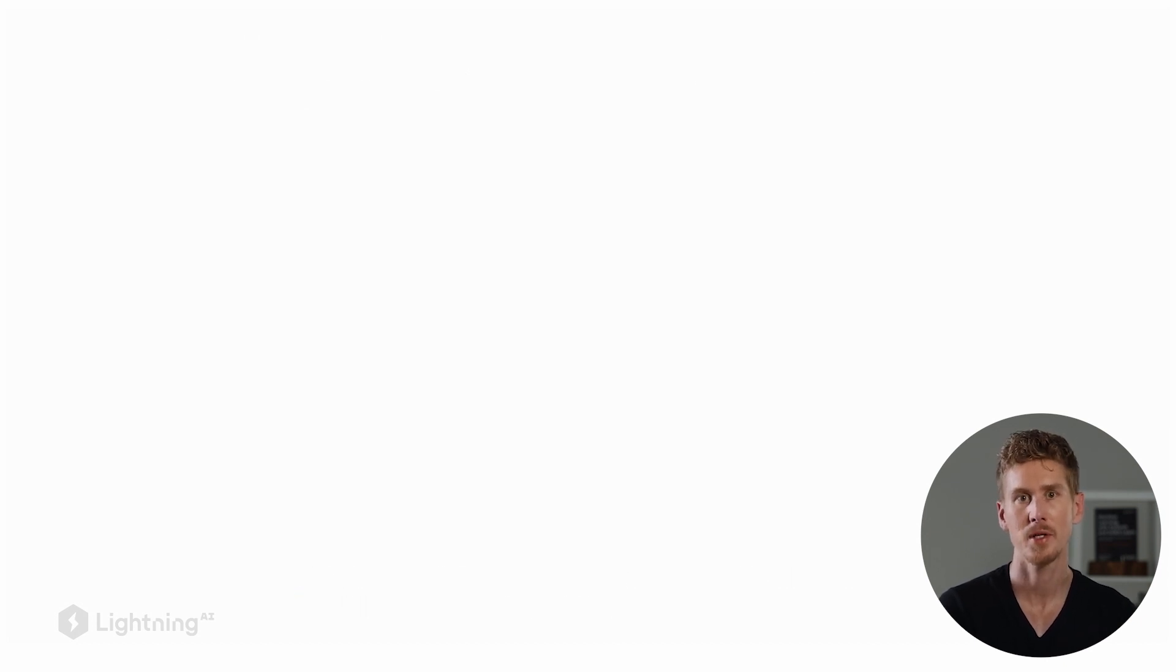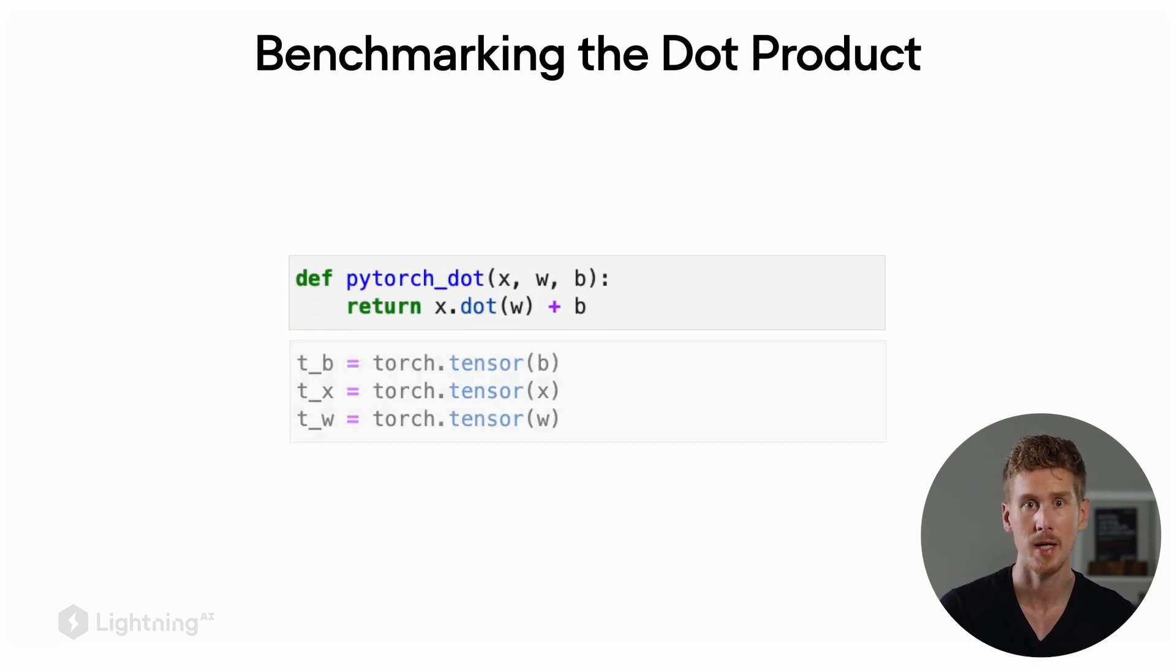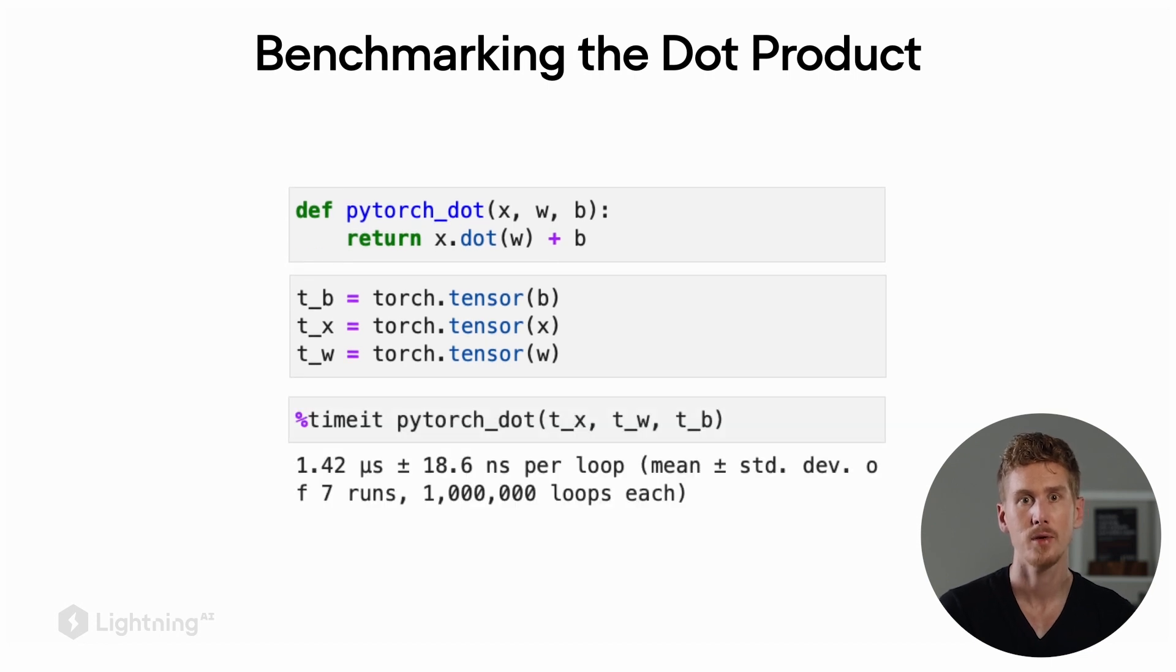Now let's compare this to the PyTorch dot product. First we are converting the Python lists into PyTorch tensors. And then we can use the timeit function in the Jupyter notebook again to compute the runtime of the PyTorch dot product. In this case, the runtime of this dot product is 1.42 microseconds.